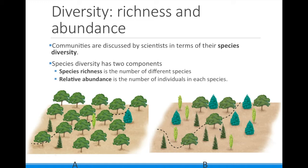What is different about the two woodlots is the relative abundance of these species. Woodlot A has many more of the large broadleaf tree than any of the other trees, but woodlot B has about the same number of all four species of trees. Thus woodlot B is more diverse.